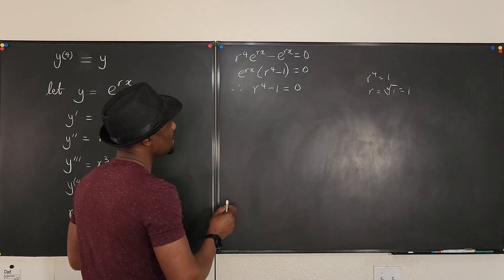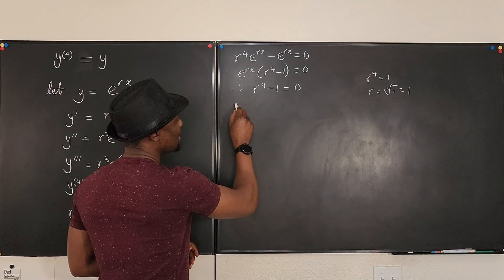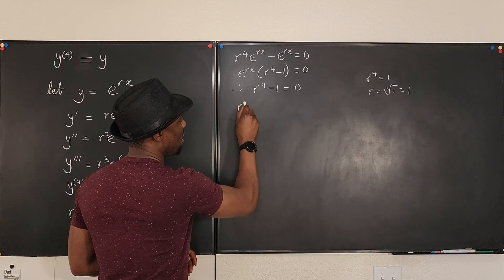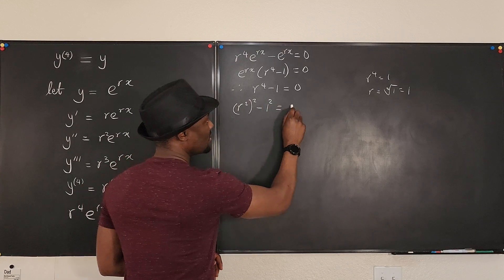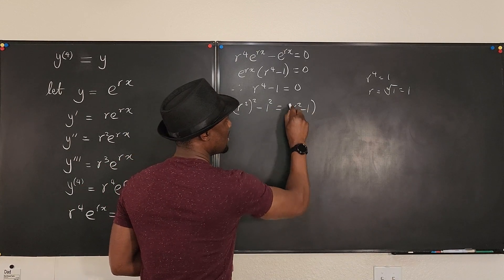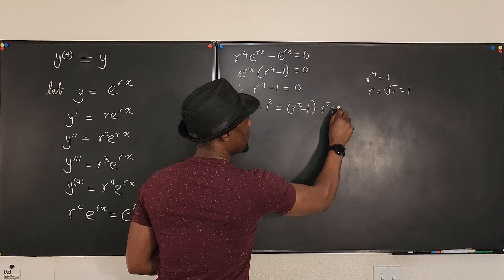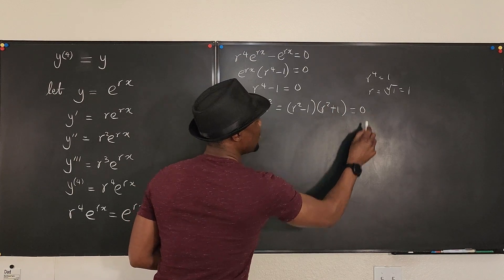So here, what do we do? Well, we know that this is the difference of two squares. This is r squared, squared minus one squared. So this becomes r squared minus one times r squared plus one, and it's equal to zero.